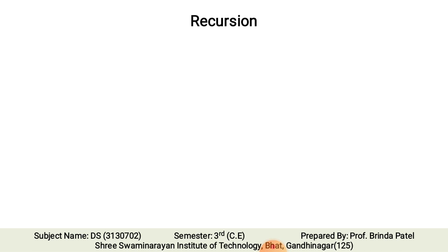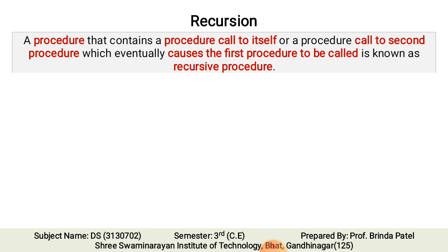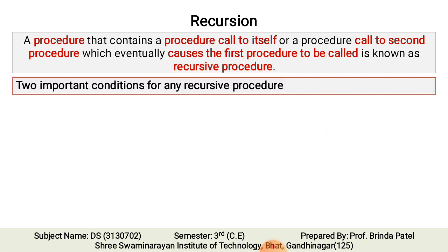Now let's discuss recursion — one type of application of stack, like prefix and postfix. A procedure that contains a procedure call to itself, or a procedure call to a second procedure which eventually causes the first procedure to be called, is known as a recursive procedure. Basically, a function calling itself repeatedly is a recursive function.